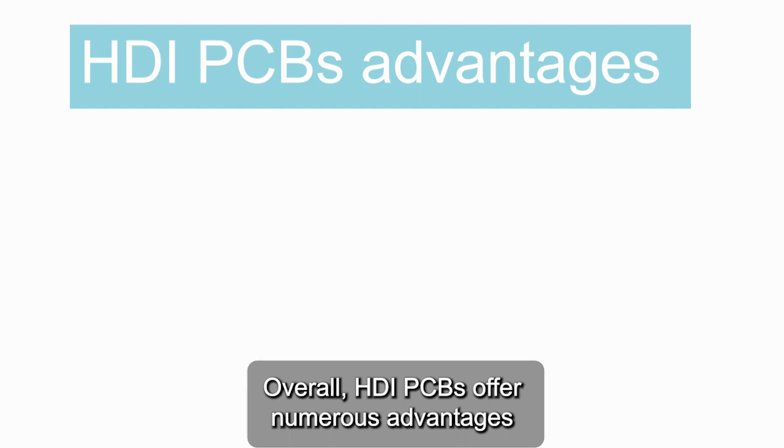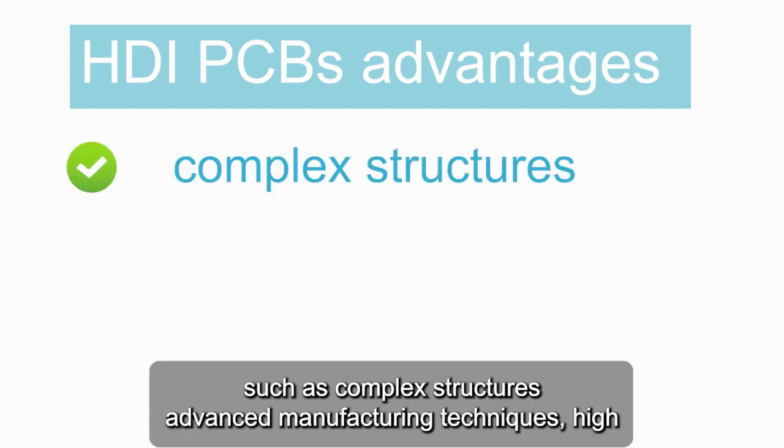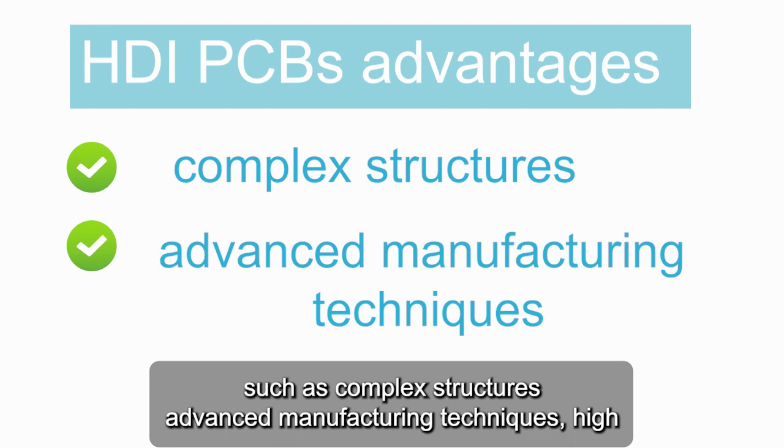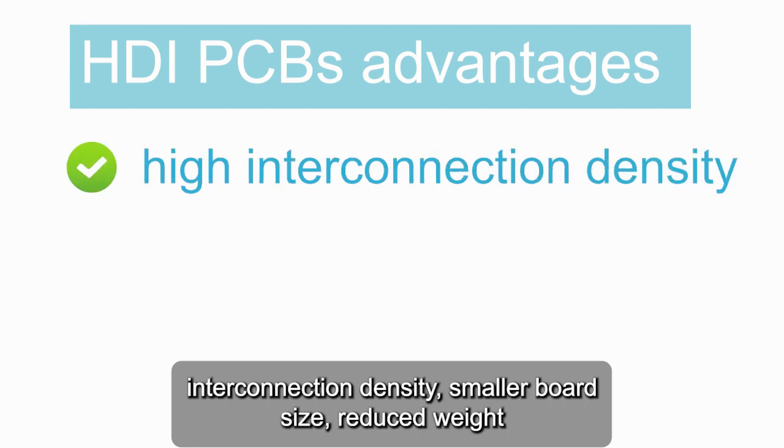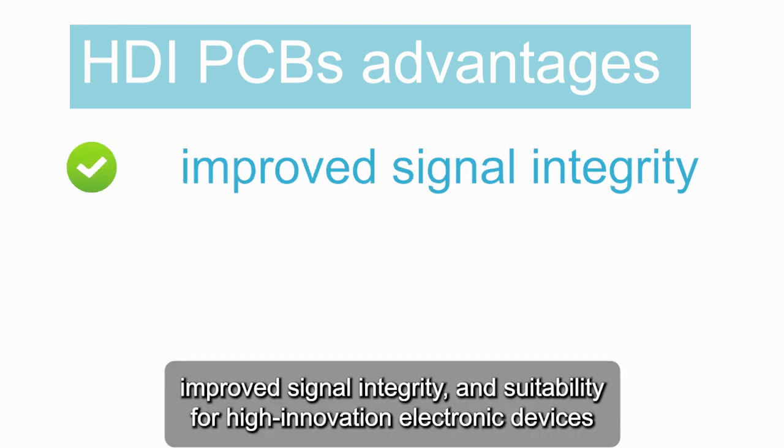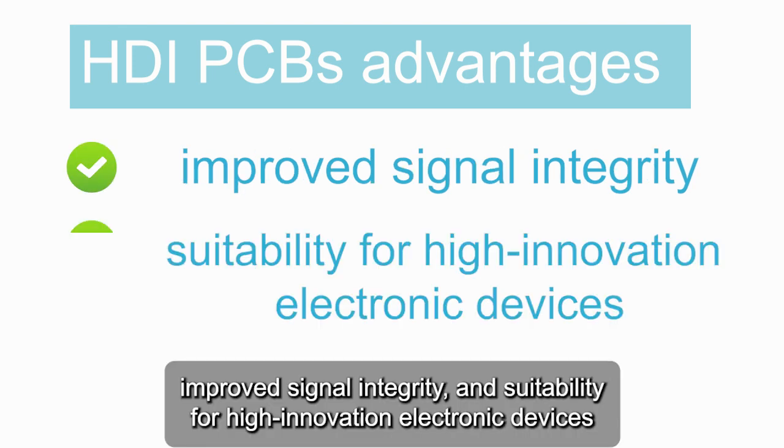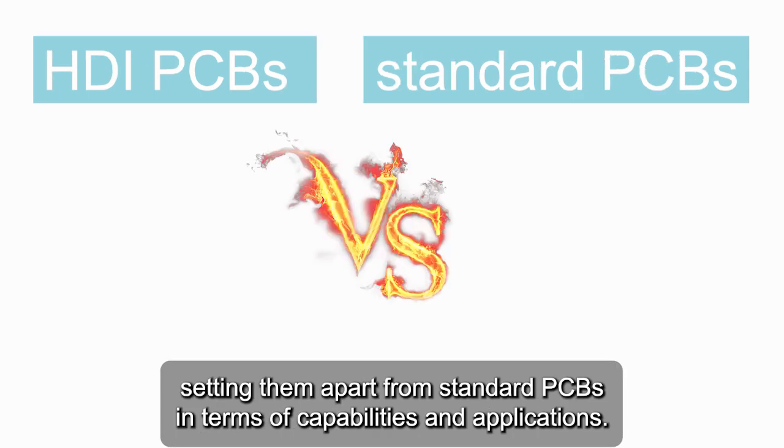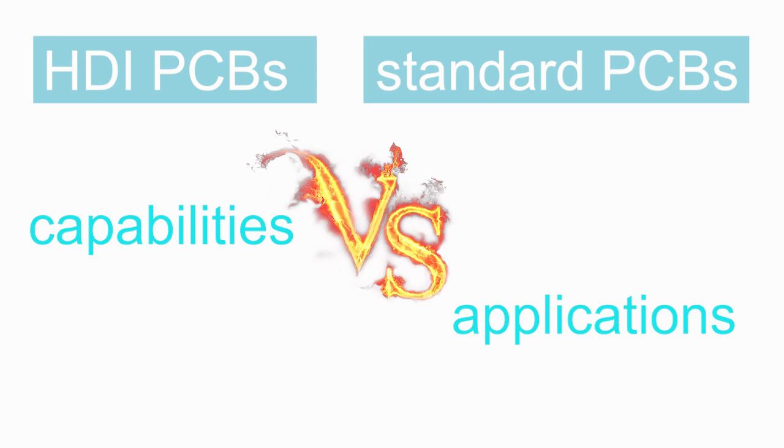Overall, HDI PCBs offer numerous advantages such as complex structures, advanced manufacturing techniques, high interconnection density, smaller board size, reduced weight, improved signal integrity, and suitability for high-innovation electronic devices, setting them apart from standard PCBs in terms of capabilities and applications. For more information, please visit www.hdiPCBs.com.